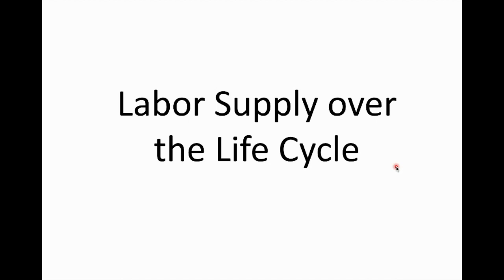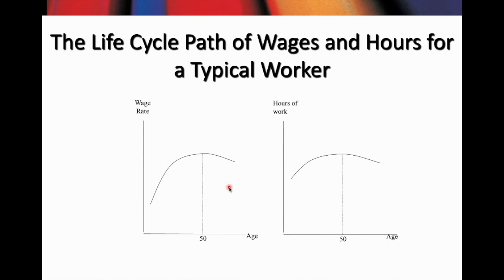Labor supply over the life cycle. In the last discussions we have seen a static analysis about workers' decisions to work or not, and how many hours to work. Apart from the static analysis, here we want to see labor supply over the life cycle. What we mean by the life cycle is that we are considering the position of labor supply over a long period. The life cycle of a worker may start from, let's say, the age of 25 up until the standard retirement age in Malaysia, 60 years old. Given this life cycle, as a worker, how do you allocate the level of leisure and consumption over the life cycle? That's what we want to understand in this analysis.